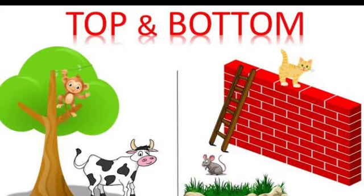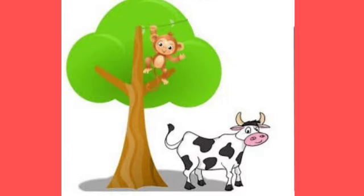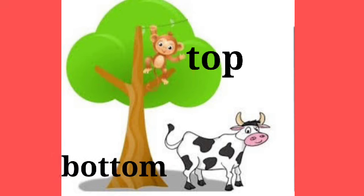Today we will learn the concept of top and bottom. In this picture there is a monkey and a cow. The monkey is on the top of the tree, whereas the cow is at the bottom of the tree. Monkey on the top and cow at the bottom.